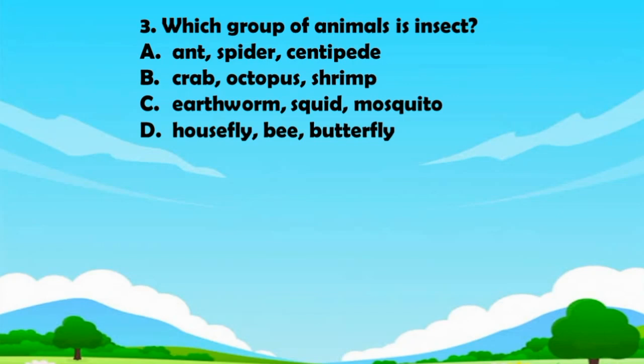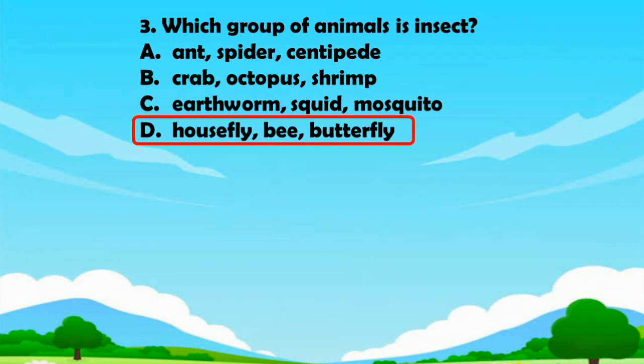Question number three. Which group of animals is an insect? A. Ant, Centipede. B. Crab, Octopus, Shrimp. C. Earthworm, Squid, Mosquito. D. Housefly, Butterfly. The answer is Letter D. Housefly, Butterfly.